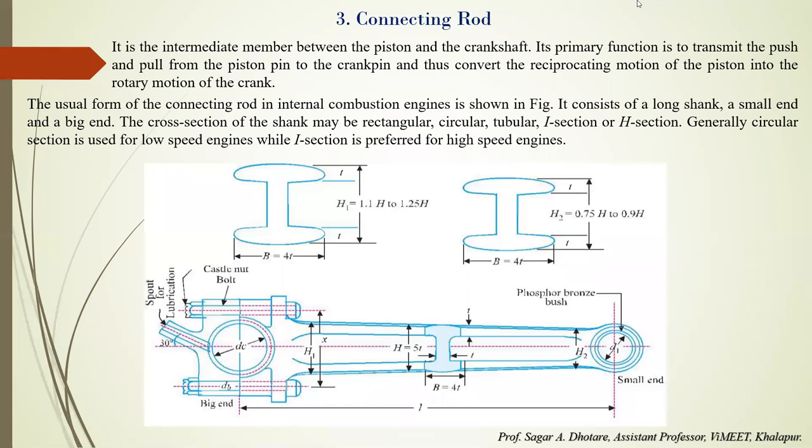Next: the connecting rod. The primary function of the connecting rod is to transmit the force from the piston to the crank and vice versa. A secondary function is to carry lubricating oil from the crank pin to the piston pin through a drilled hole. The basic parameters discussed in connecting rod design are: construction, material of the connecting rod, loads acting on the connecting rod, design of the connecting rod body, and design of the other parts of the connecting rod.